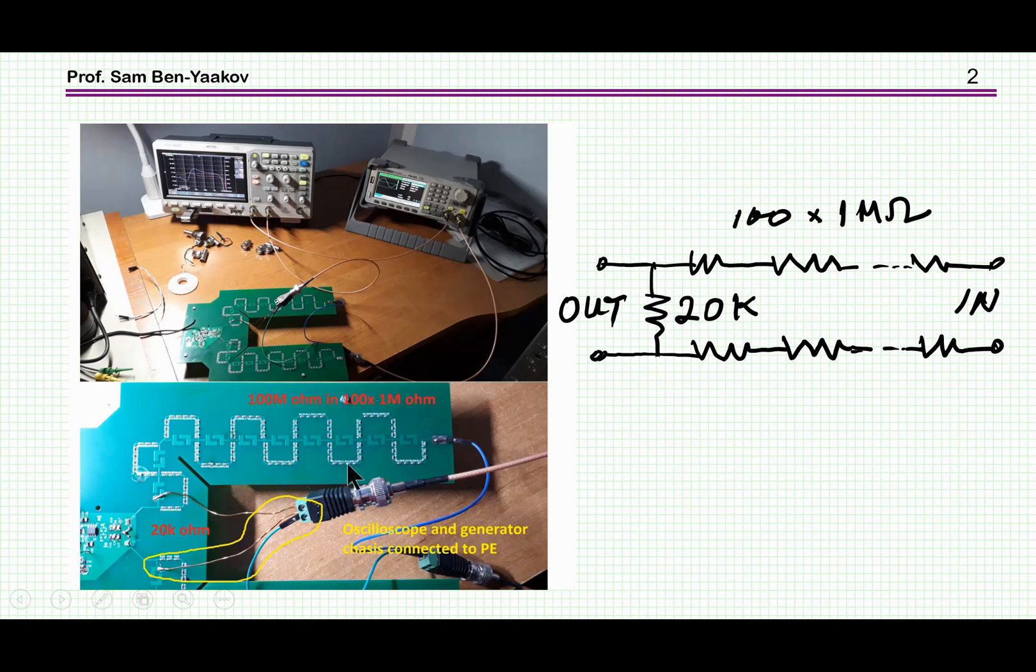We have here the board. This is the two inputs, this is the output, here is the generator, the function generator to feed it. And here is the scope which can also do the transfer function as a function of frequency. So this is the experimental unit.